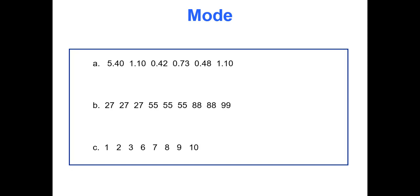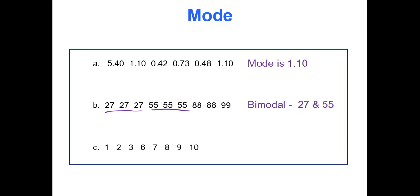Here are some sample data sets. In part A — 5.4, 1.1, 0.42, 0.73, 0.48, 1.10 — the mode is clearly 1.10, since it occurs twice. In part B, 27 occurs three times and 55 occurs three times, while 88 occurs twice and 99 once. Since there's a tie, the data set is bimodal: 27 and 55 are both modes. In part C, the values 1 through 10 each occur once, so there is no mode.